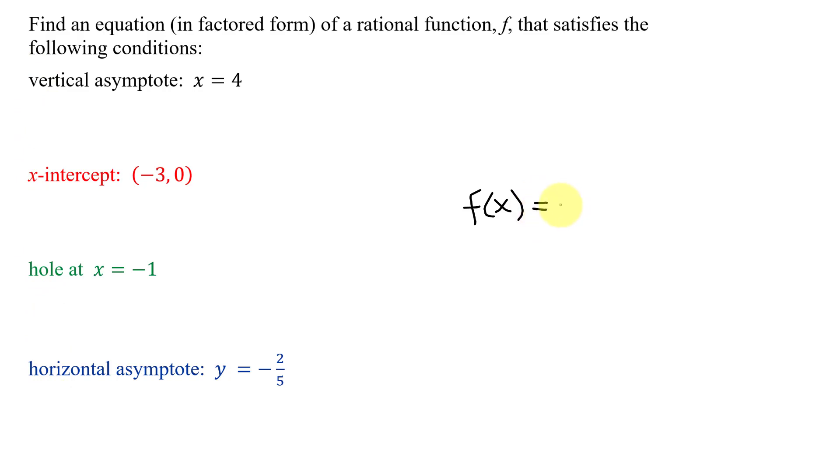I know f(x) is a rational function, and I need to figure out what goes in the numerator and the denominator of this function. Looking at the first piece of information we were given, I have a vertical asymptote when x equals 4. Where do we get vertical asymptotes from? It's from looking at the simplified version of the function, and we set the denominator equal to 0. So I know I'm going to need a factor in the denominator that goes with this vertical asymptote.